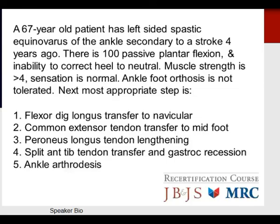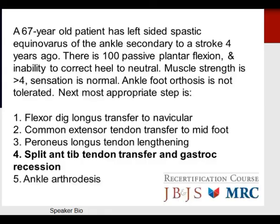Question: A 67-year-old patient has left-sided spastic equinovarus of the ankle secondary to stroke four years ago. There is 100 degrees of passive plantar flexion and inability to correct the heel to neutral. Muscle strength is greater than four, sensation is normal, and an AFO is not tolerated. Options include flexor digitorum longus transfer to navicular, extensor tendon transfer to midfoot, peroneus longus tendon lengthening, split anterior tibial tendon transfer and gastroc recession, or ankle arthrodesis. The appropriate response is the split anterior tibial tendon transfer and gastroc recession.